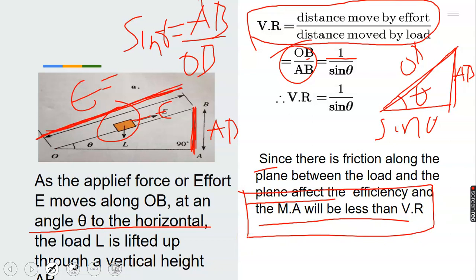Take note: there are multiple choice questions where you may be asked which statement is not correct — whether mechanical advantage is more than velocity ratio, velocity ratio is more than mechanical advantage, or they are equal. You should know that because of friction, mechanical advantage is always less than velocity ratio for an inclined plane.